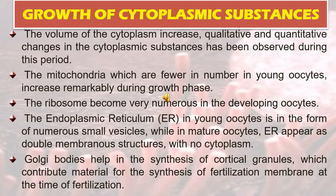The volume of the cytoplasm increases, and both qualitative and quantitative changes in cytoplasmic substances have been observed during this period. The mitochondria, which are fewer in number in young oocytes, increase remarkably during the growth phase. Ribosomes become very numerous in the developing oocyte. The endoplasmic reticulum in young oocytes is in the form of numerous small vesicles, while in mature oocytes it appears as double-membranous structures. Golgi bodies help in the synthesis of cortical granules, which contribute material for the synthesis of the fertilization membrane at the time of fertilization.